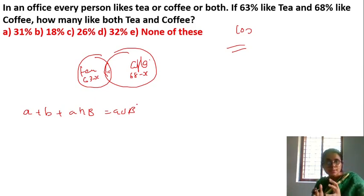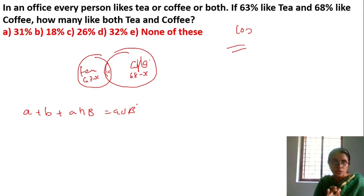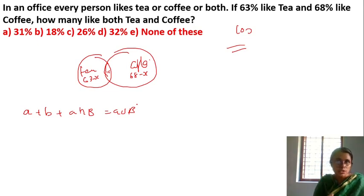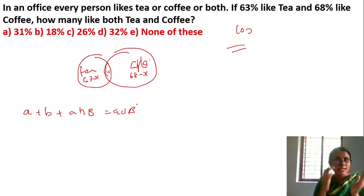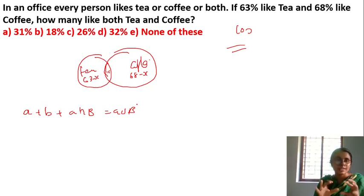You can see 63% like tea and 68% like coffee. So here it is 63% and 68%. Now applying the formula.